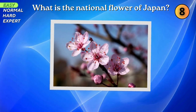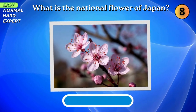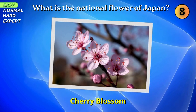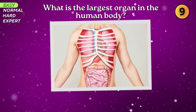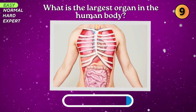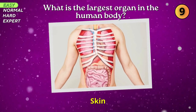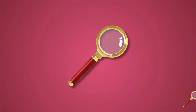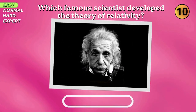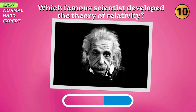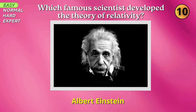What is the national flower of Japan? Cherry blossom. What is the largest organ in the human body? Skin! Which famous scientist developed the theory of relativity? Albert Einstein.